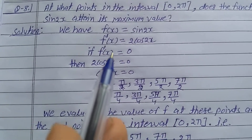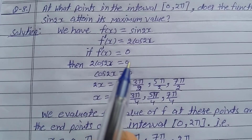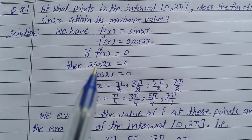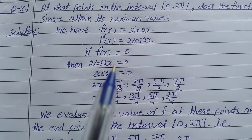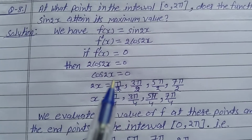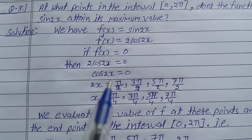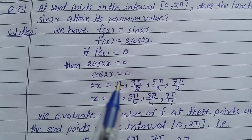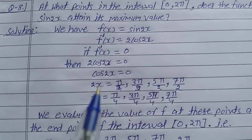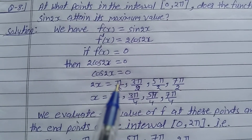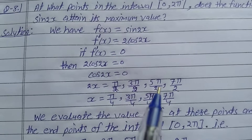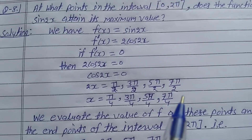If f'(x) is equal to 0, then 2 cos(2x) is equal to 0, so cos(2x) is equal to 0. This means cos(2x) equals 0 for these points. So 2x is equal to π/2, 3π/2, 5π/2, and 7π/2.